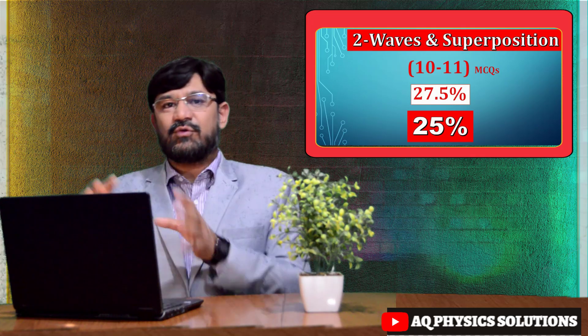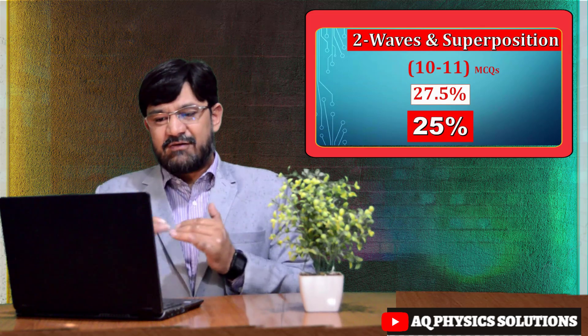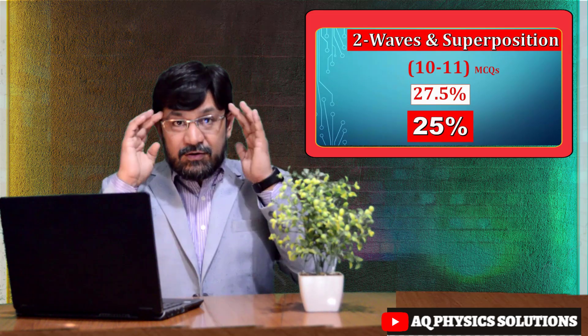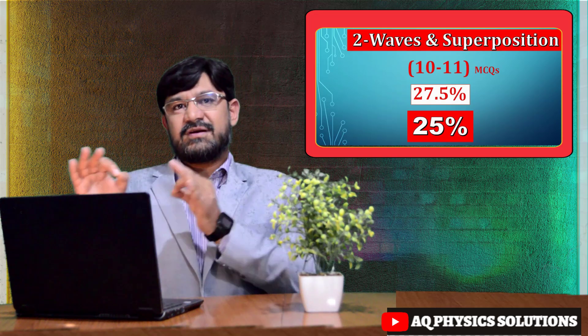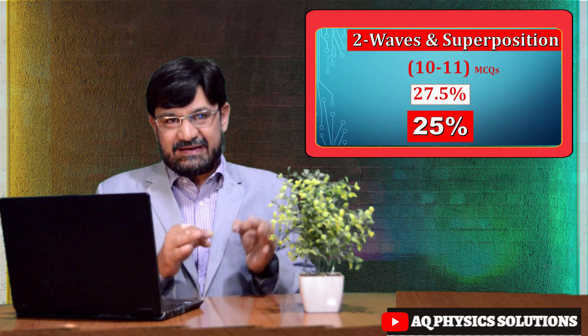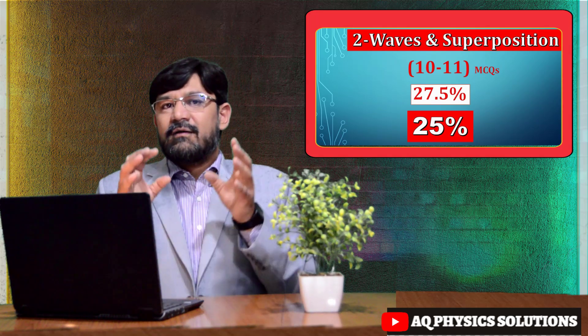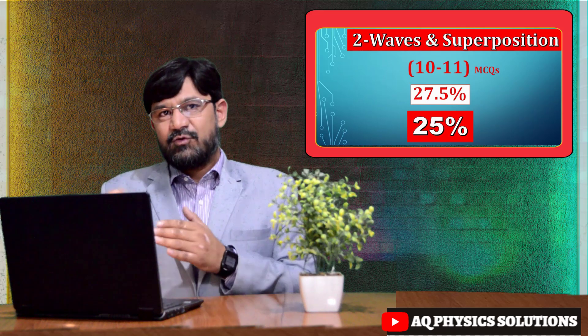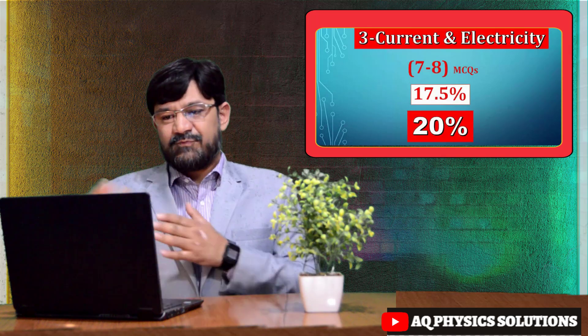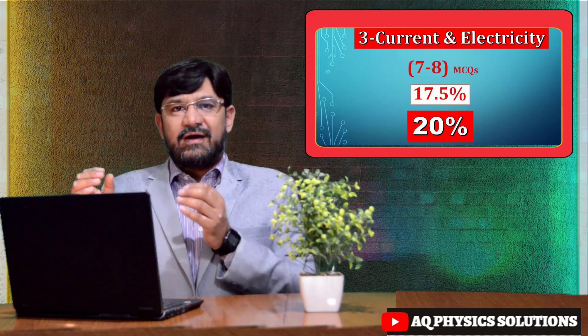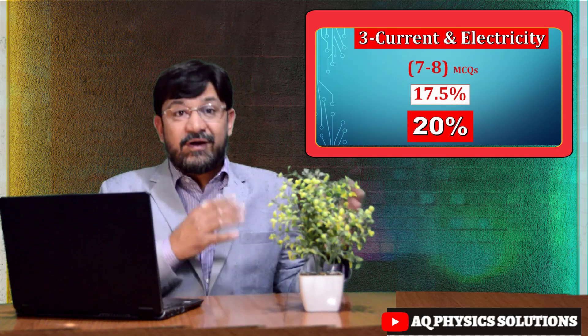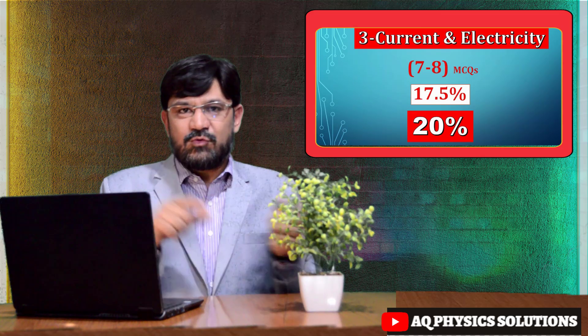Waves and superposition contributes 10 to 11 MCQs, with a weightage of approximately 25 percent. Strive to practice all these areas to secure your grades. The third block, current and electricity, spans roughly questions 31 to 37 or 38, consisting of seven to eight MCQs — representing 17.5 to 20 percent of the paper.